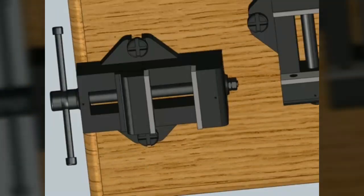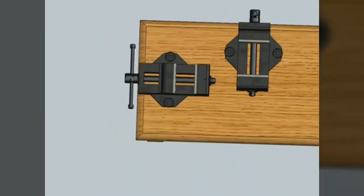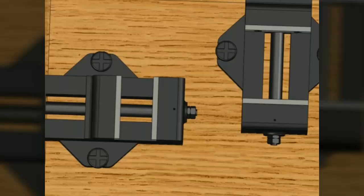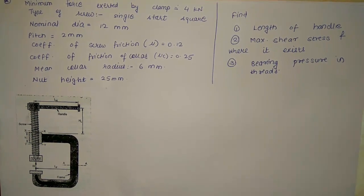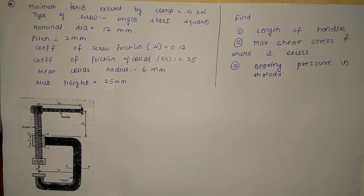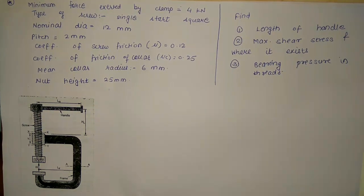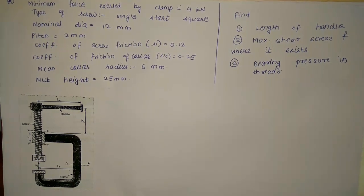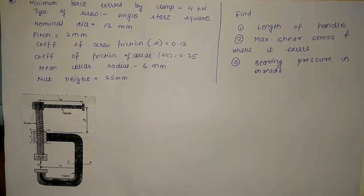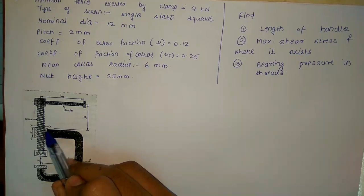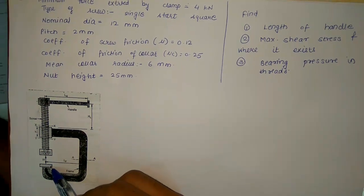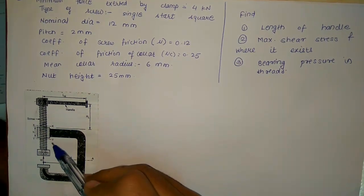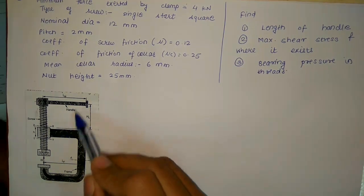Today let's study how to design a C-clamp. A C-clamp is a portable device used for clamping or holding a workpiece — such as a pipe or sheet metal — for cutting and bending purposes. It consists of a screw and nut mechanism. One jaw of the C-clamp is fixed whereas the other jaw is movable in an up and down motion.